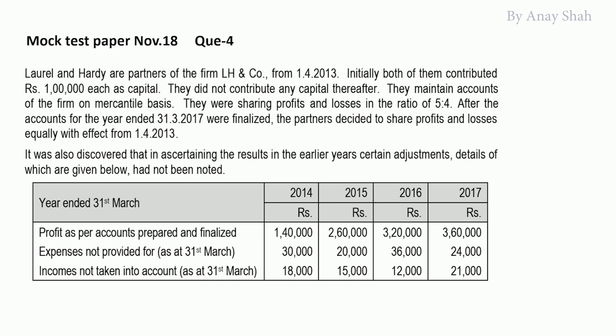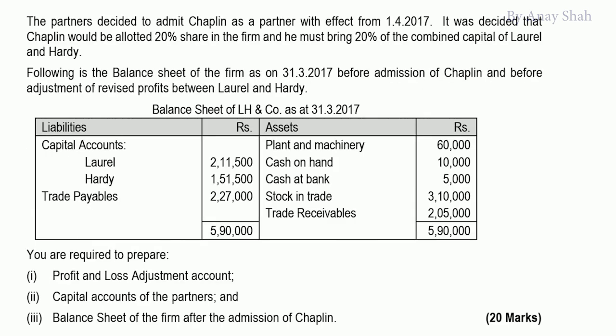For each of the 4 years, there are incomes and expenses that remain unrecorded. If there are any mistakes in previous years in a partnership, that information is given here. The 4 years' profits need to be revised, and these unrecorded expenses and incomes need to be recorded in the partners' capital accounts.